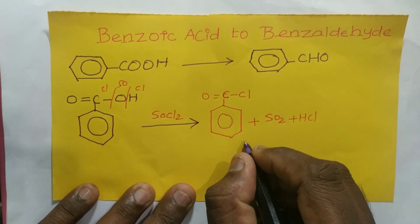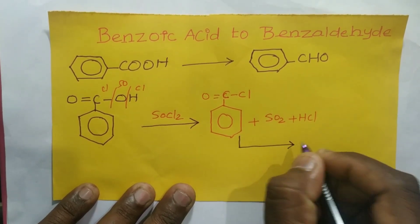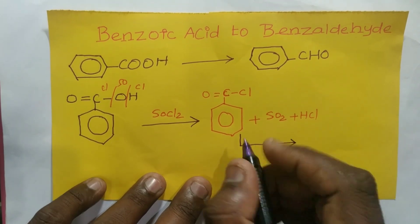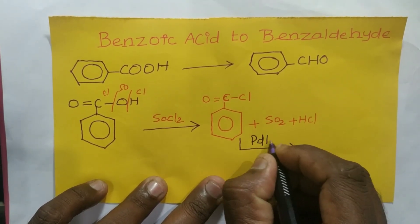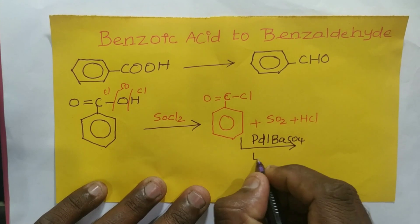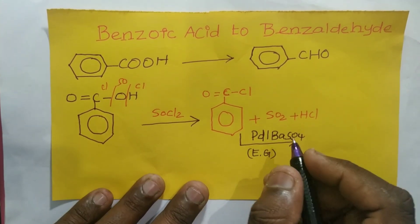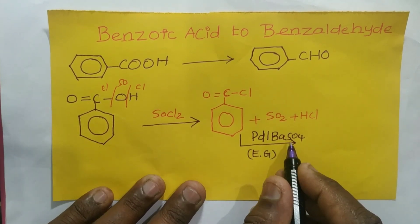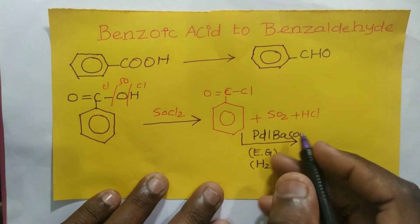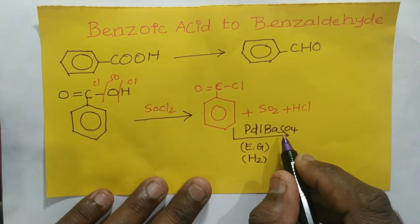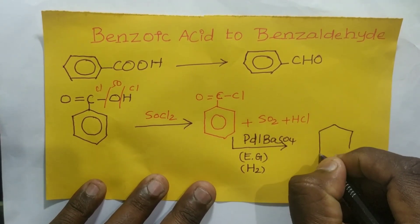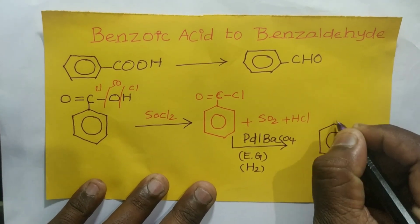After obtaining acyl chloride, to prepare benzaldehyde I use palladium along with barium sulfate (BaSO₄) in the presence of a high boiling solvent like ethylene glycol or xylene. I carry out a hydrogenation reaction where H₂ acts as the reducing agent and barium sulfate is used as a poison.